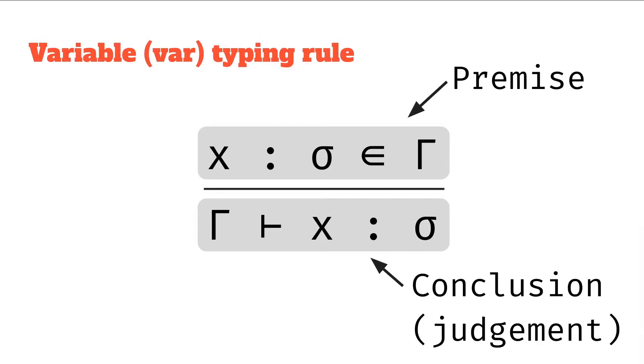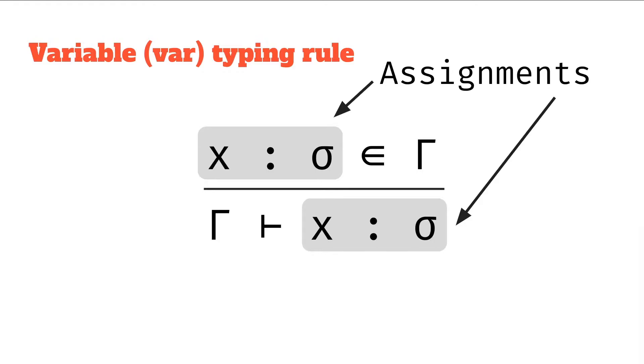What other pieces can we recognize from what we've seen before? Well we've got this thing x has type sigma, we've seen that a few times before, and this is an assignment where we have an expression, in this case our variable expression x, and then a colon means has type, and then the sigma here is just any kind of polytype.